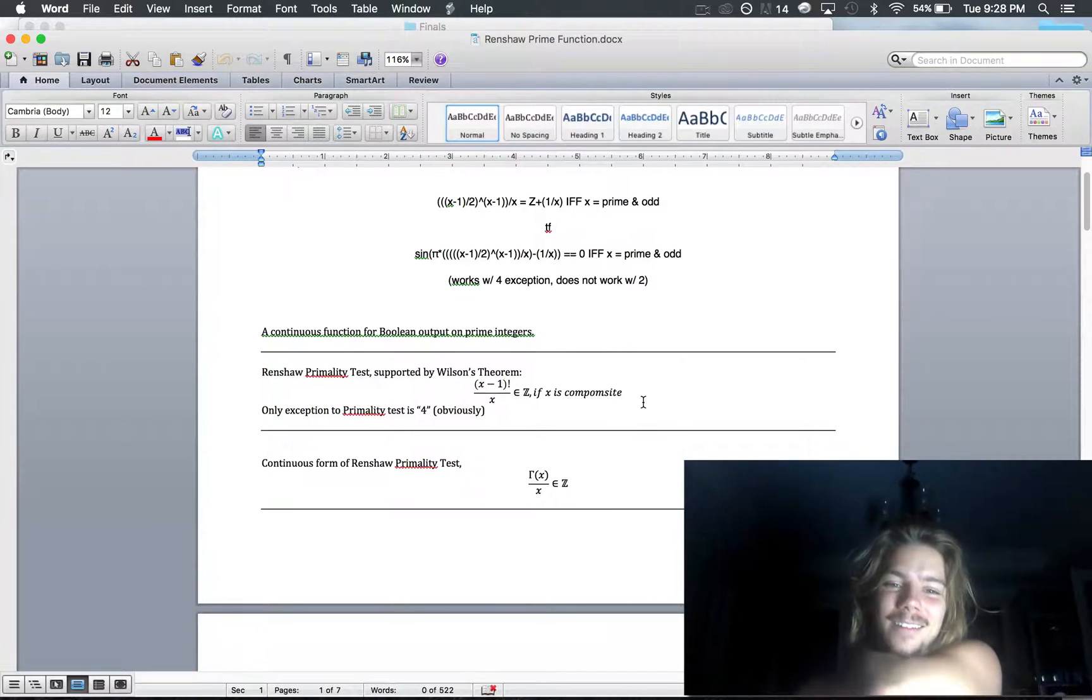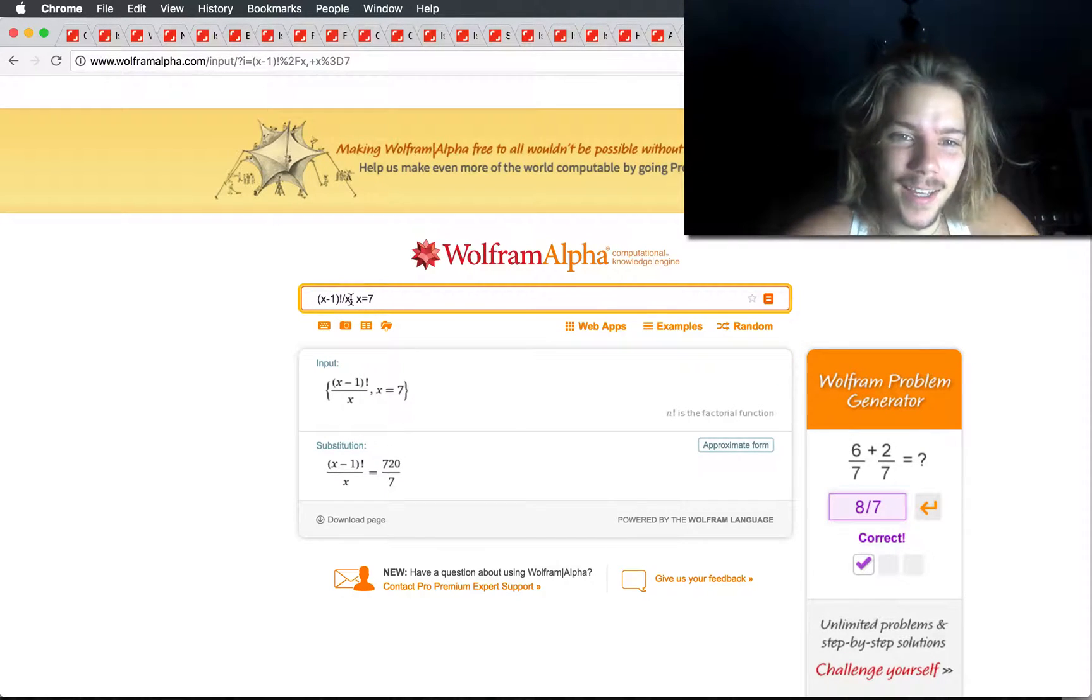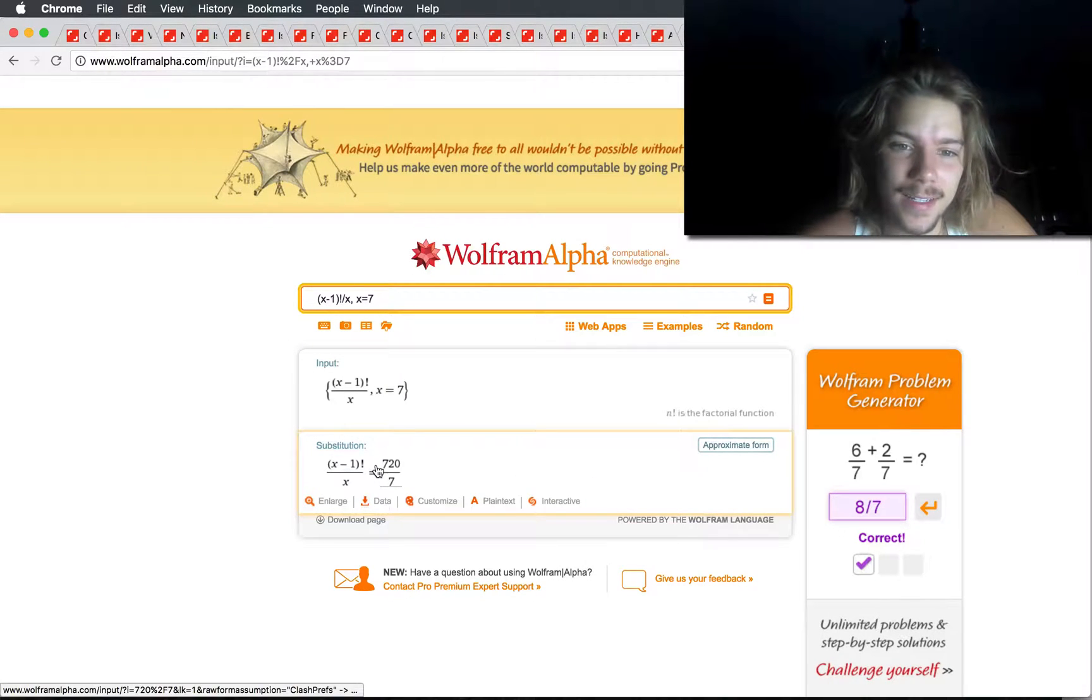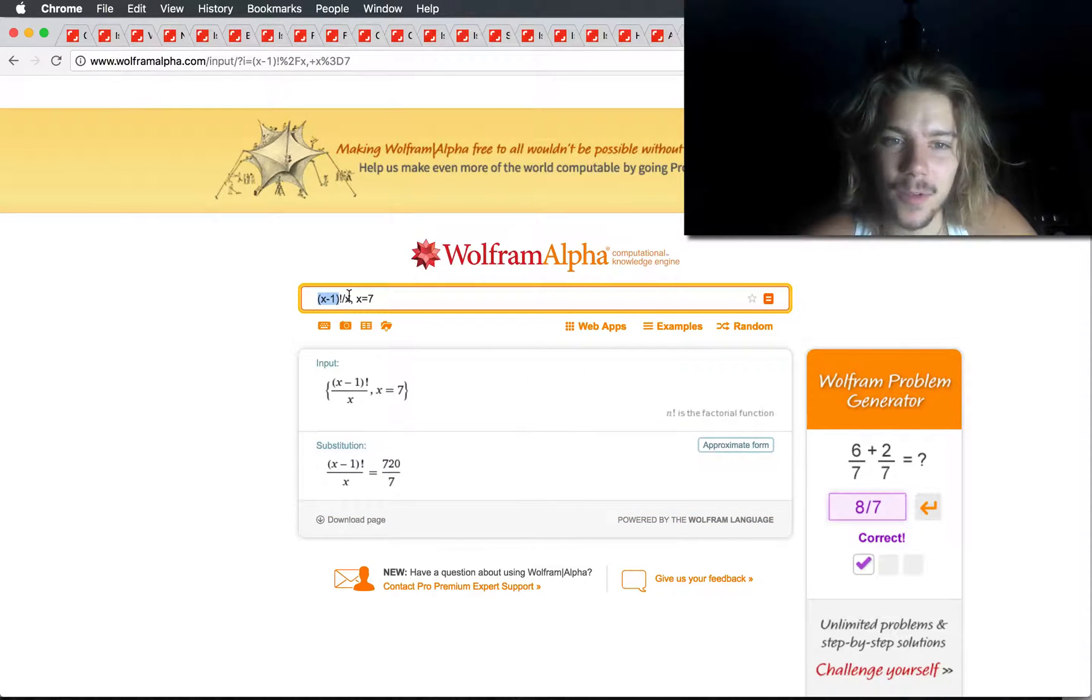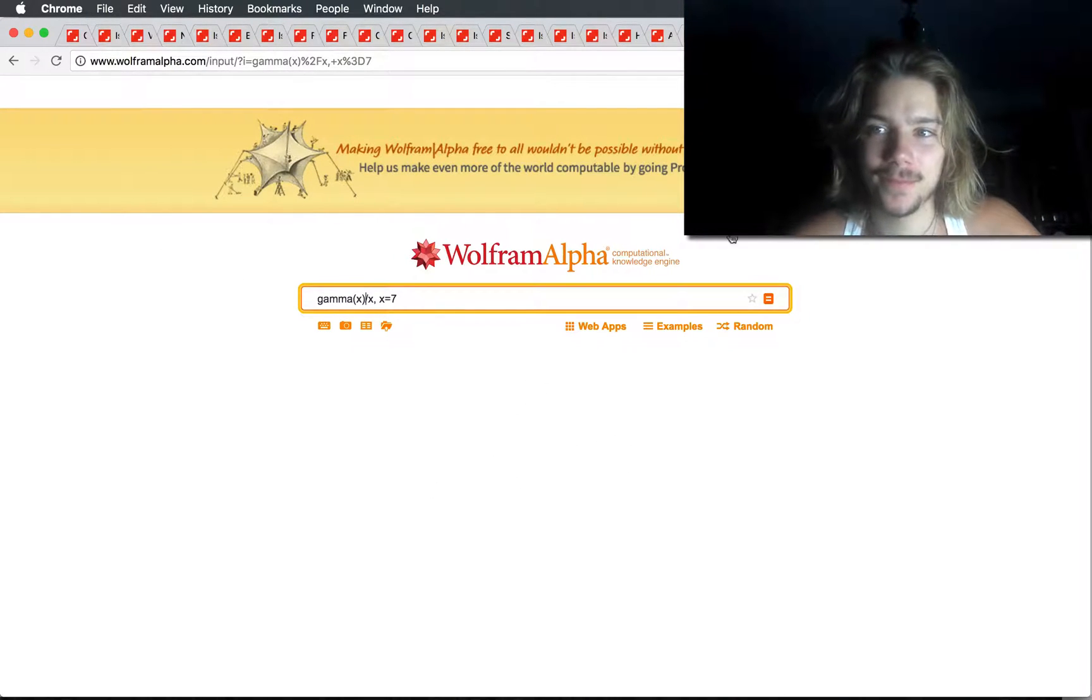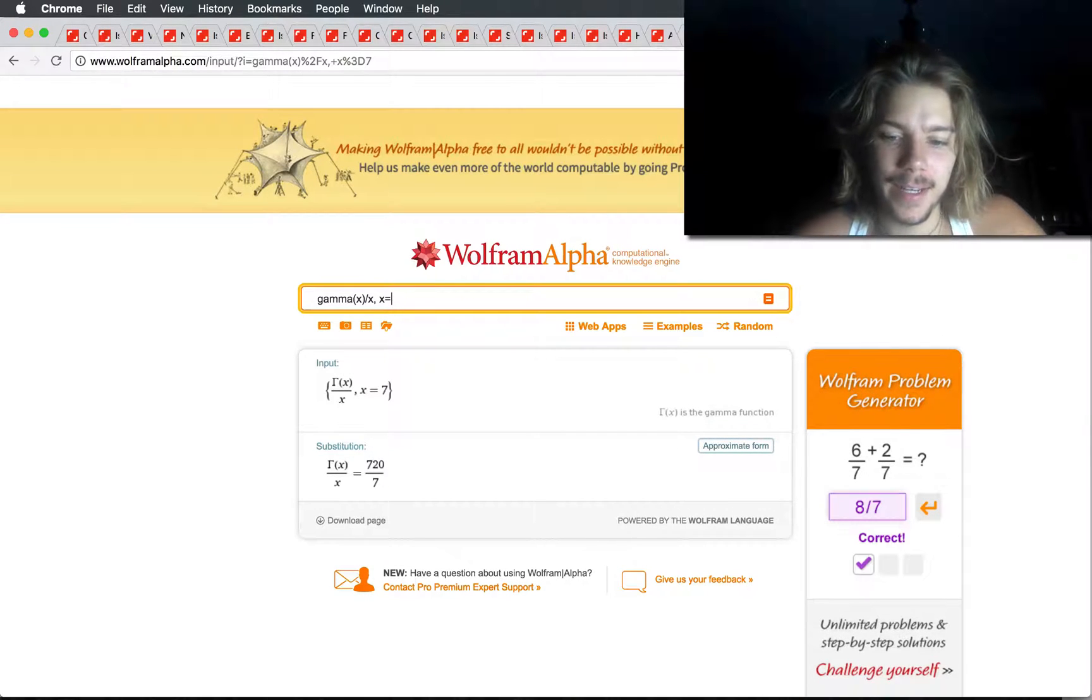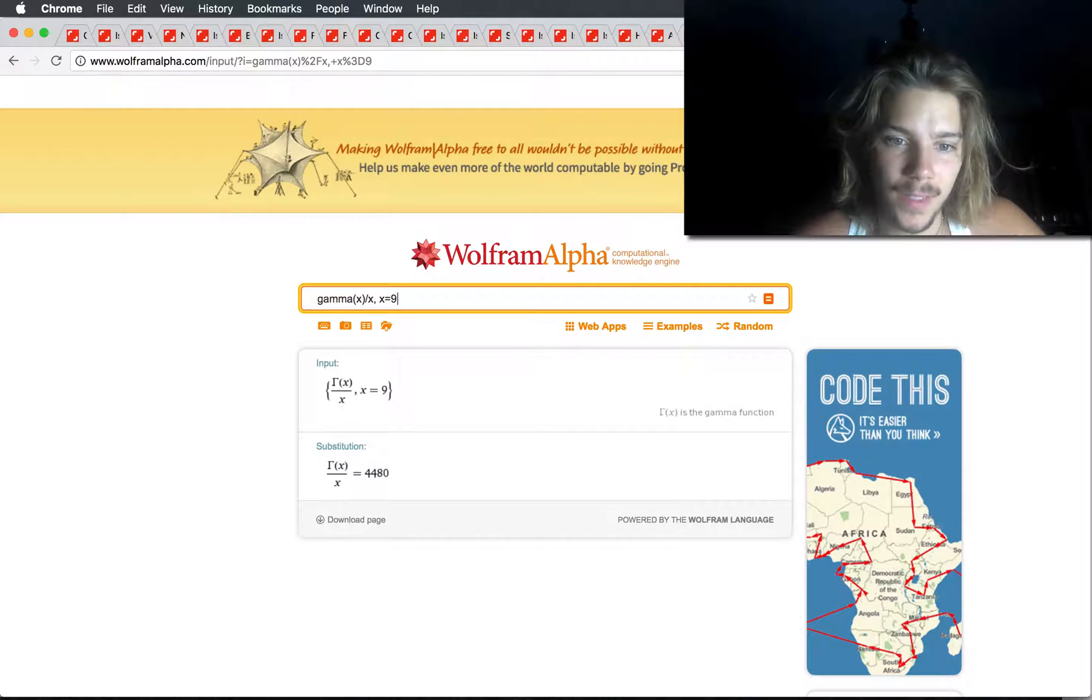So the first thing I realized was, okay, here's a basic version of the function I wrote. In fact, the function I originally wrote had the factorial in the bottom and some other things, but this is the simplified form. So 7 is prime, and the result here is a number and 1/7. I'm going to go ahead and swap out x minus 1 factorial with just gamma x. I think it's easier to work with.